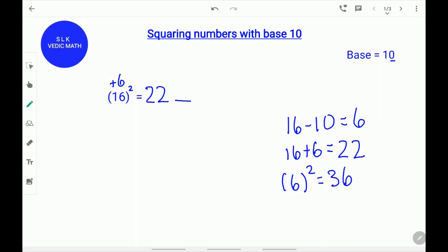Since there is only supposed to be one digit, we write the 3 on top of 2 and write the 6 as it is. Next, 2 and then add 3 plus 2, 5 and 6. So, the answer for 16 square is 256.